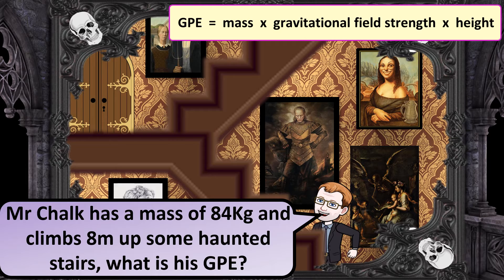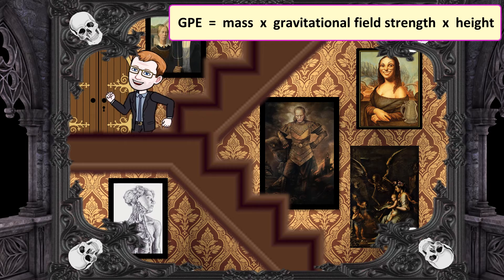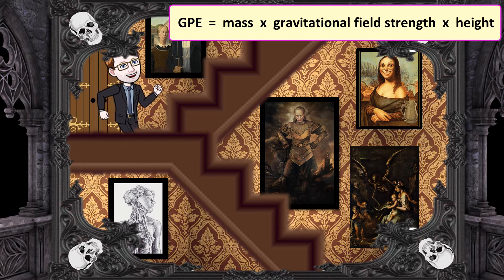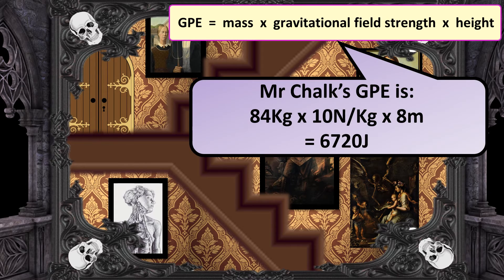If Mr. Chalk has a mass of 84 kilograms and climbs 8 meters up some haunted stairs, what would be his GPE? That would be 84 times 10 times 8, which gives 6,720 joules.